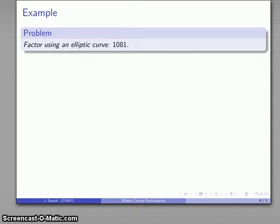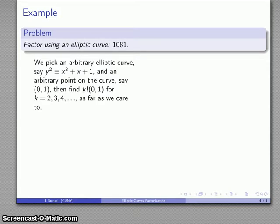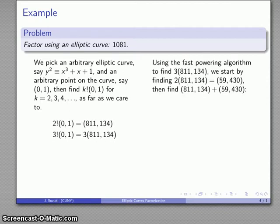Let's take a look at another example: 1081. Again, I'll pick an arbitrary elliptic curve, say y² = x³ + x + 1, and an arbitrary point on the curve, say (0,1). I'll find k!(0,1) for k equals 2, 3, and so on as far as I care to. So 2!(0,1) is (811,134), 3!(0,1) is 3(811,134). Using the fast powering algorithm, I'm going to find 3 of these by first finding 2 of these, which I can do—it's (59,430). Then I'll add 1 of these plus 2 of these to get 3 of these.